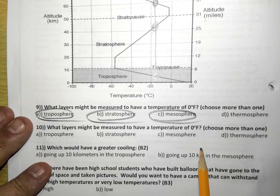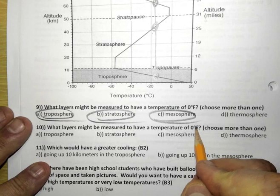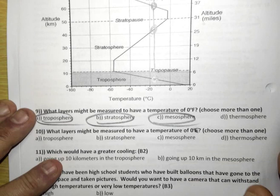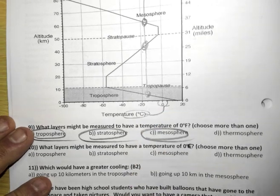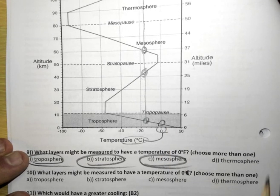The next question is the exact same thing. So let's change this Fahrenheit to be Celsius. So here we have the Celsius temperatures, and right there is the zero. So how many layers have zero Celsius? It's only the troposphere.